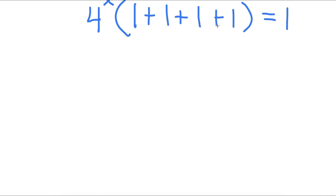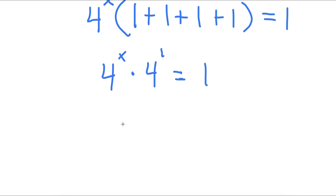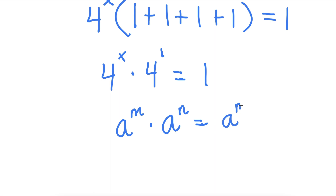If I simplify what's in the parentheses, I get 4. So now I have 4 to the power of x times 4 is equal to 1. Now, if I have something in the form a to the power of m times a to the power of n, this is equal to a to the power of m plus n.